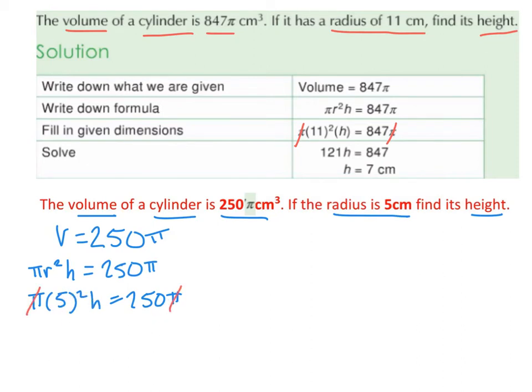We're left with 5 squared h. 5 squared is 25, so we get 25h. So 25h equals 250. h is going to be 250 divided by 25, and 250 divided by 25 is going to be 10. So the height will be equal to 10 cm.